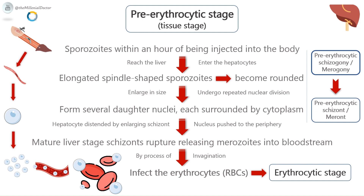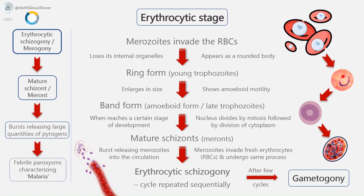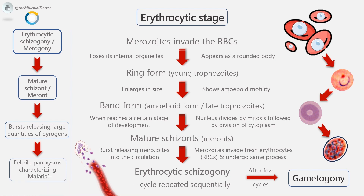The merozoites infect the erythrocytes by a process of invagination, beginning the erythrocytic stage. The merozoites released by pre-erythrocytic schizogony invade the RBCs. The receptor for merozoites is glycophorin, which is a major glycoprotein on the red cells. The differences in the glycophorins of red cells of different species may account for the species specificity of malaria parasites. In the erythrocyte, the merozoite loses its internal organelles and appears as a rounded body having a vacuole in the center, with the cytoplasm pushed to the periphery and the nucleus at one pole. These young parasites are called ring forms or young trophozoites. The parasite feeds on the hemoglobin of the erythrocyte, leaving behind a hematin-globin pigment called the malaria pigment or hemozoin as residue. The malaria pigment released when parasitized cells rupture is taken up by reticuloendothelial cells, providing histological evidence of previous malaria infection.